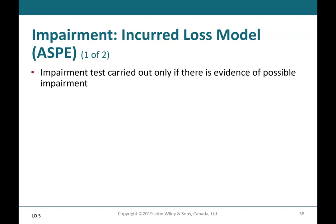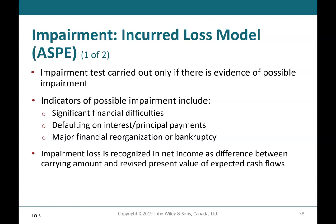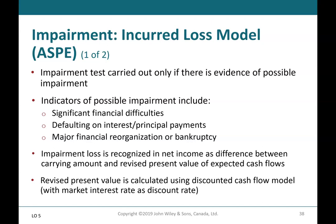Impairment Incurred Loss Model: impairment tests are carried out only if there is evidence of possible impairment. Indicators of possible impairment include significant financial difficulties, defaulting on interest and principal repayments, and major financial reorganization or bankruptcy. The impairment loss is recognized in net income as the difference between the carrying amount and the revised present value of expected cash flows. The revised present value is calculated using a discounted cash flow model with the market interest rate as the discount rate.